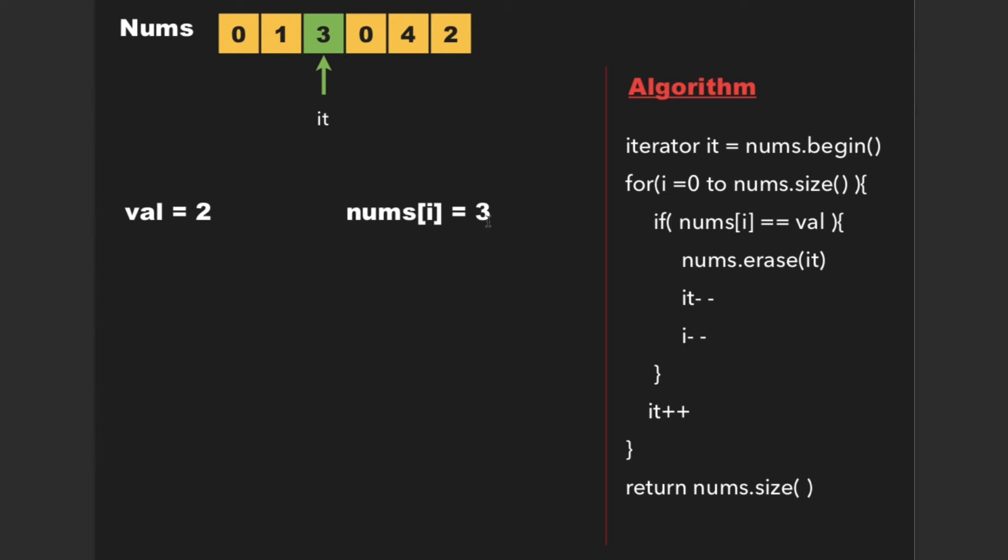Now it points to 3. Since 3 is not equal to 2, we can proceed further. Now it points to 0. Again, 0 is not equal to 2, so we can proceed further.